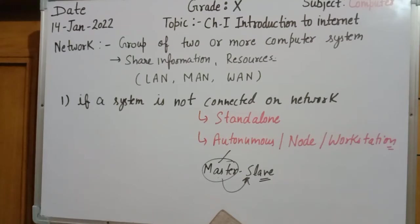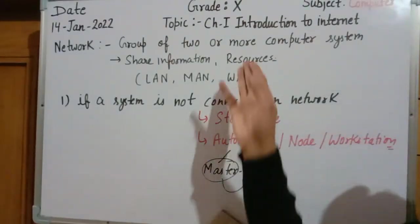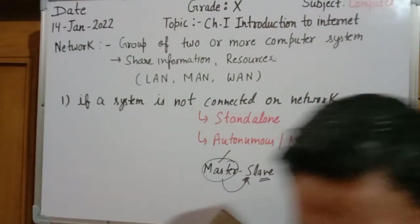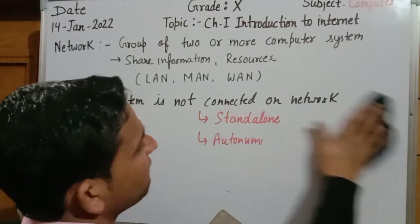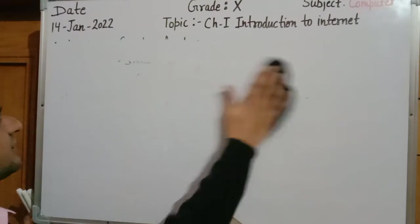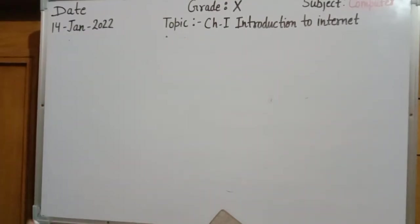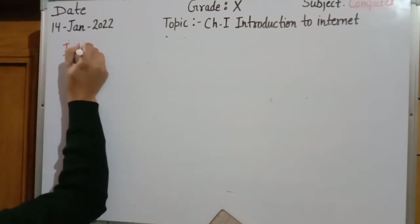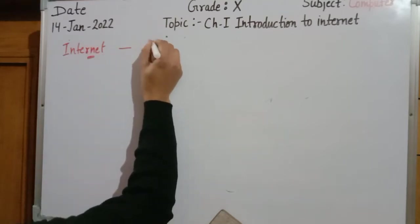Now, what is an example of internet? A network is a group of at least two or more computers. But what is a network of networks? A network of networks is known as the internet. When a network is connected with another group of networks, that is the internet.